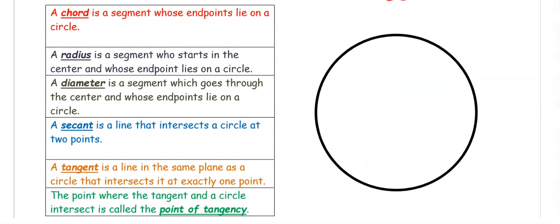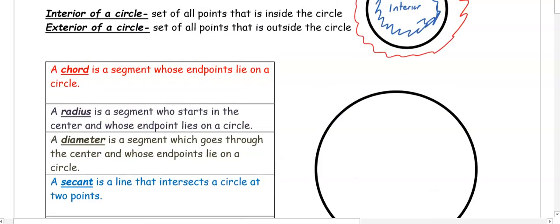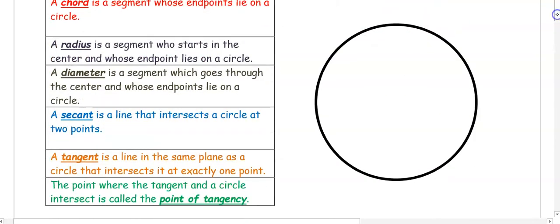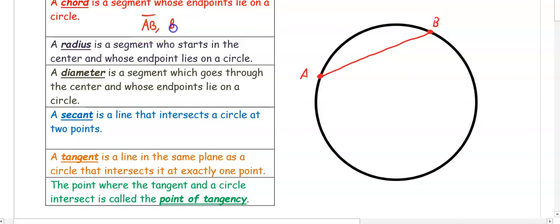A couple of vocab words. The first is a chord. A chord is a segment whose endpoints lie on the circle. So if I go from here to here, this would be a chord — AB would be a chord. It's got a start and an endpoint. We could also call it BA.